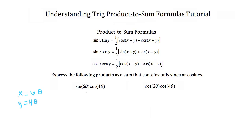To work this out, we've got one half times the sine of x plus y — so six theta plus four theta, which is ten theta — plus the sine of x minus y, so six theta minus four theta, which gives you two theta. This expresses the product as a sum.